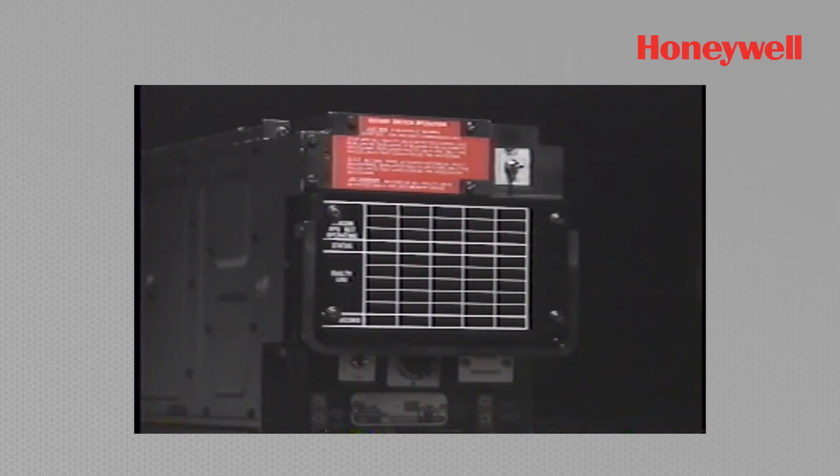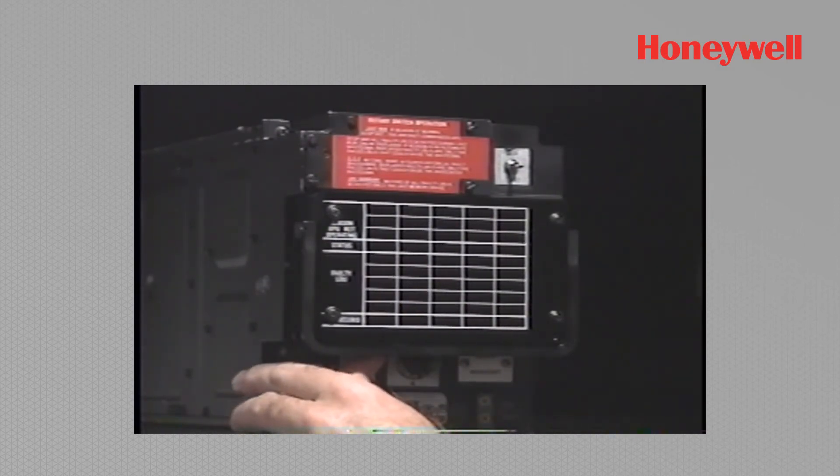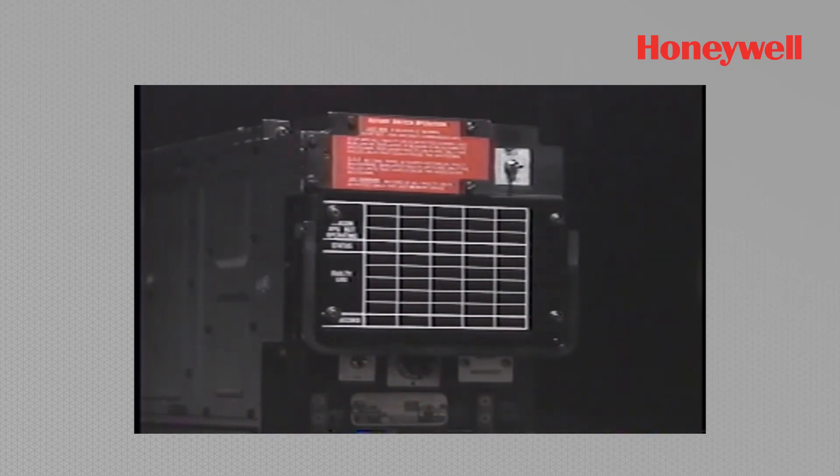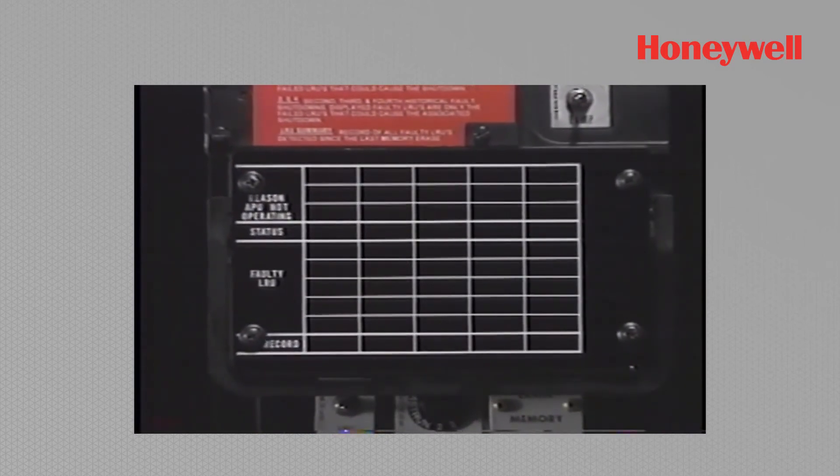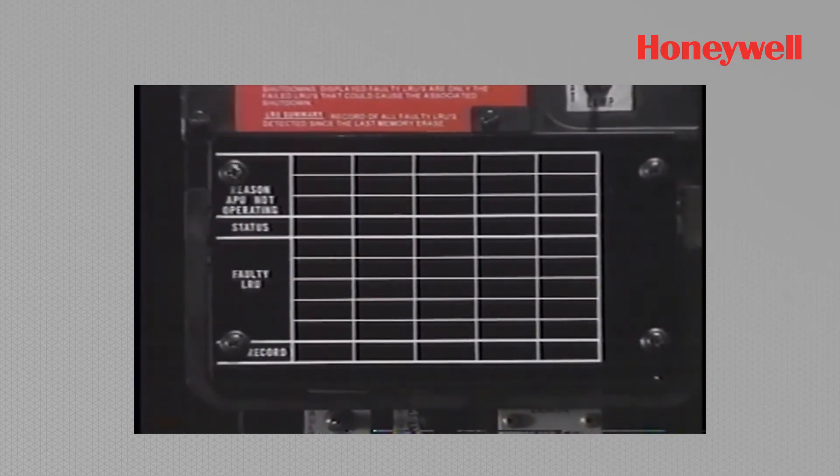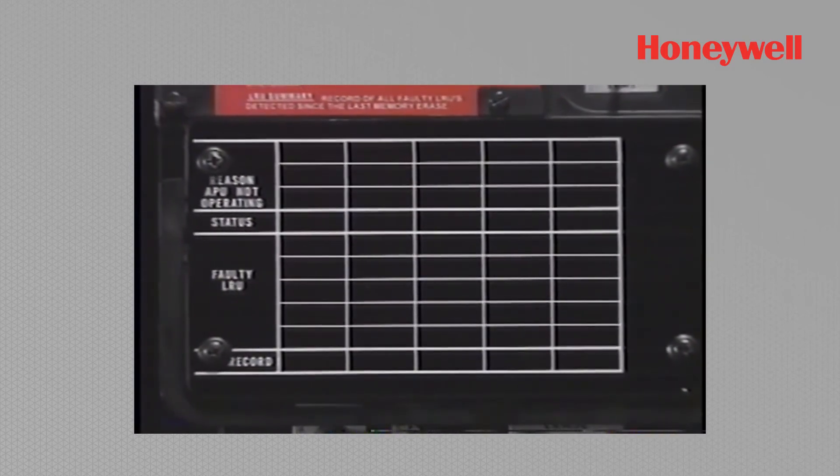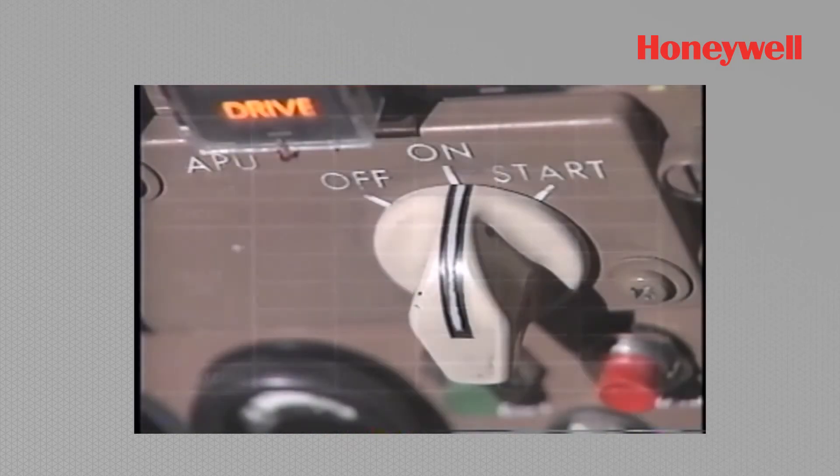If you interrogate the memory area and the front panel is not displaying something, it's indicating that you're not in the APU non-operating condition. You're either above 7% or the master switch is still in the on position.